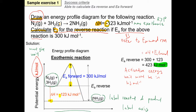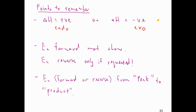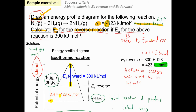Let us answer one by one. When you want to draw an energy profile diagram, first identify whether it is endothermic or exothermic. Since the enthalpy is negative, it is exothermic. For an exothermic reaction, the energy of the reactants is higher than the energy of the products.